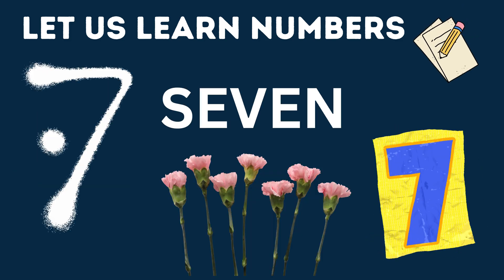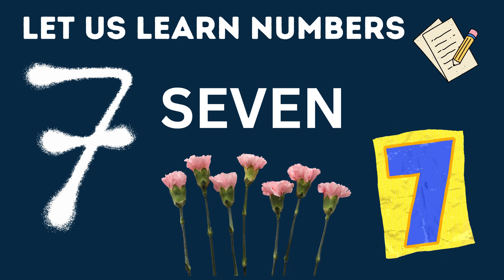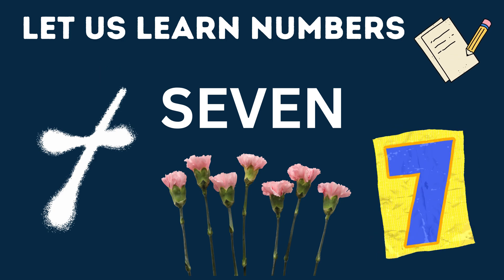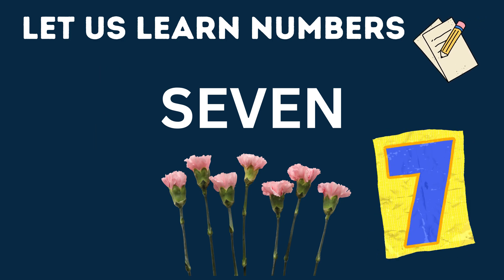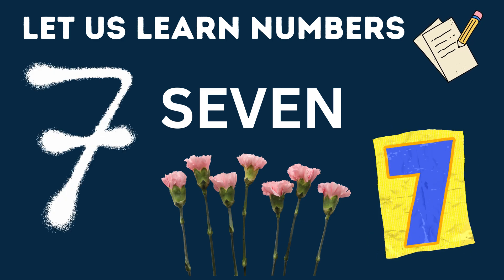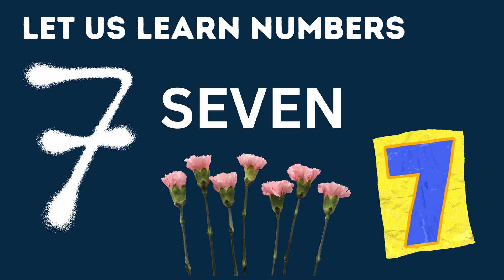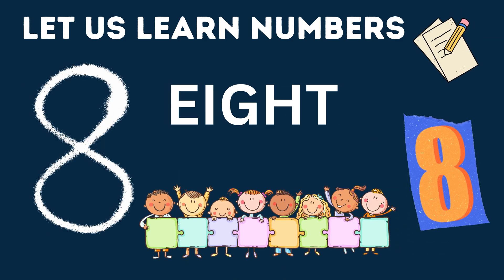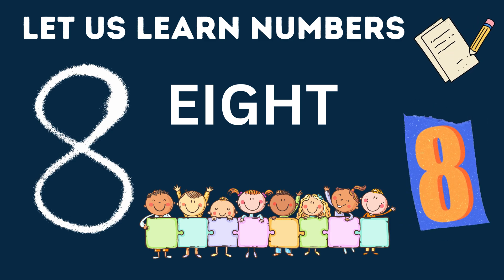OK. 7 — S, E, V, E, N — 7. How many flowers do you see? Seven pink rose flowers. OK. 8 — E, I, G, H, T — 8. How many little cute kids do you see? Eight little cute kids.